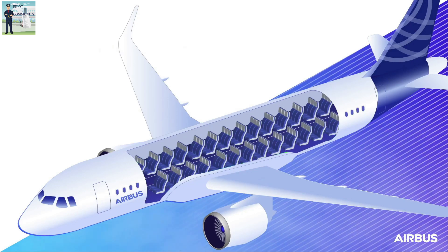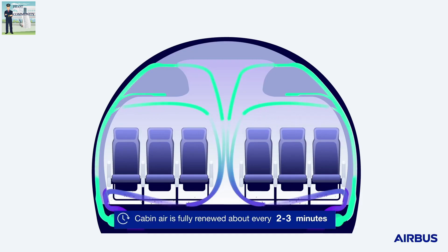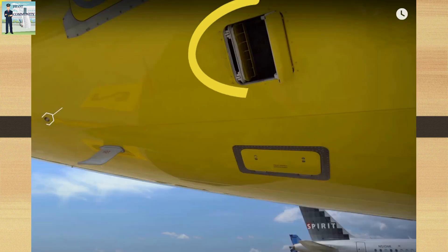To put it in simple words, the pressurization inside the aircraft is maintained by regulating the flow of air exiting the pressurized regions. This is achieved by controlling the outflow valve which is present at the tail section on the right-hand side.